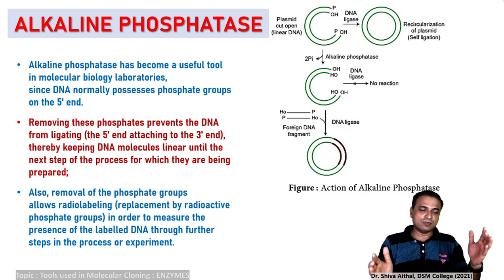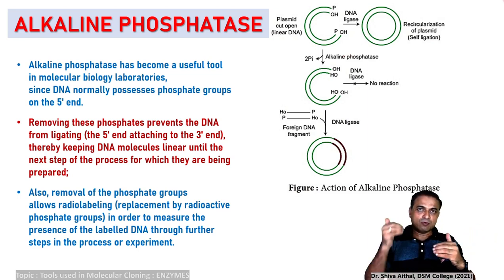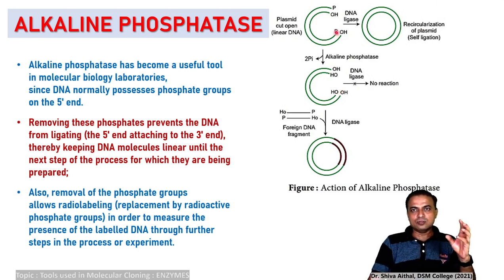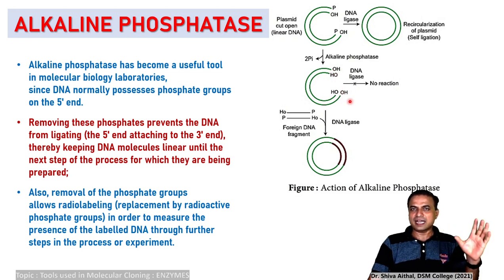We are using a variety of enzymes one after another. For a time being, you need that the vector should not re-anneal — self ligation should not happen. So you add alkaline phosphatases which removes the phosphate. As you can see, 2 Pi is removed and you have OH-OH at the end, so no reaction occurs and no self-annealing happens.